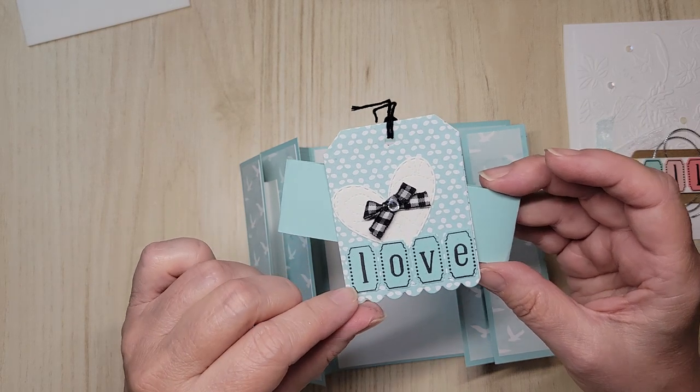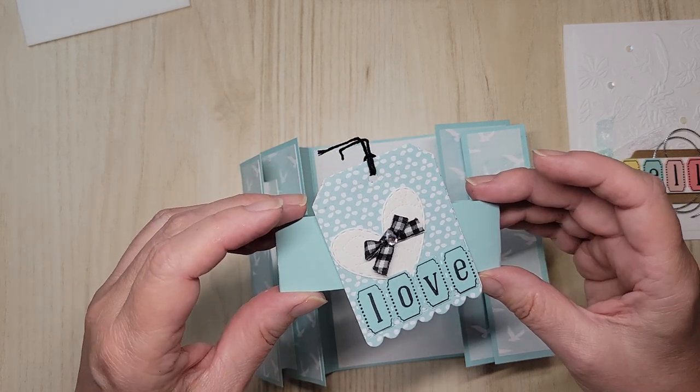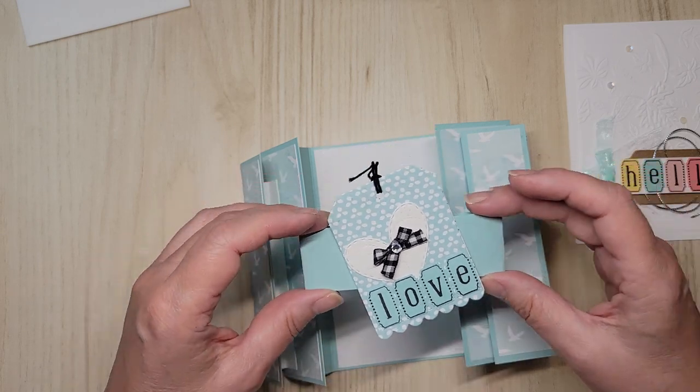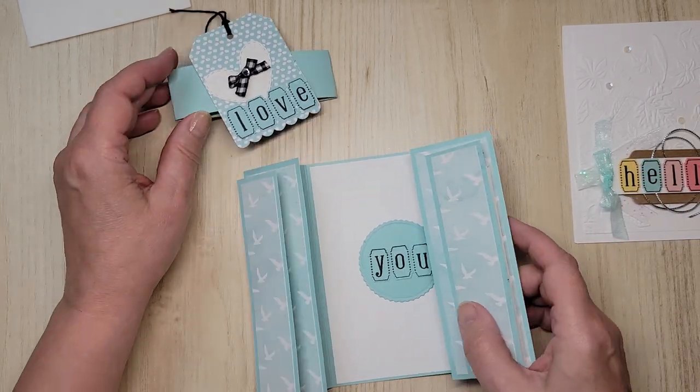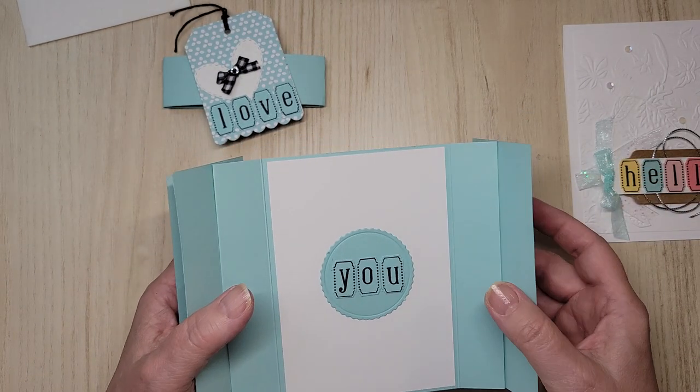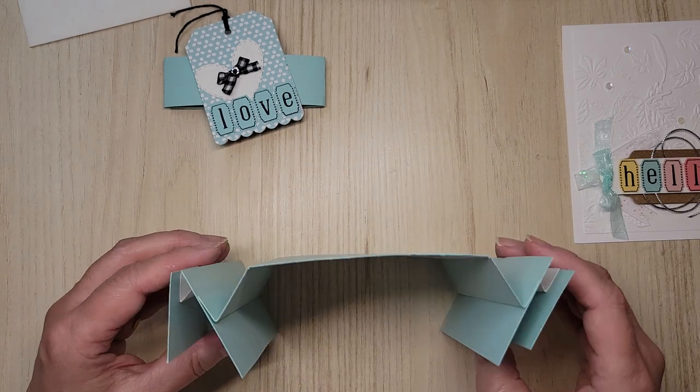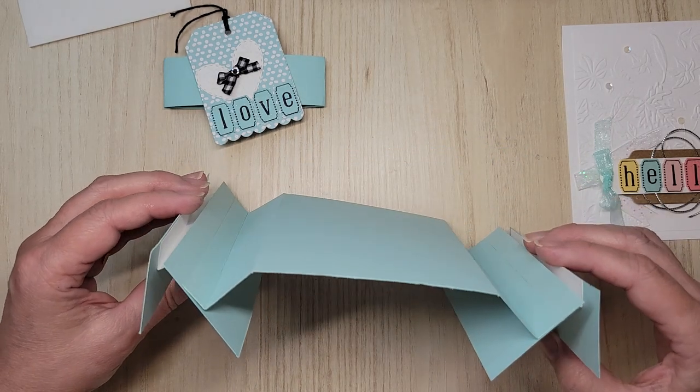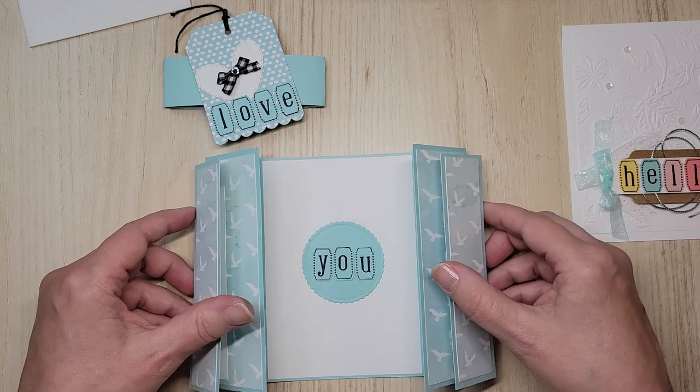My card says, this is my ballet band. And I've used one of the papers from the Design a Daydream. And the word love. This is so sparkly. So, the outside it says love. On the inside it says you.